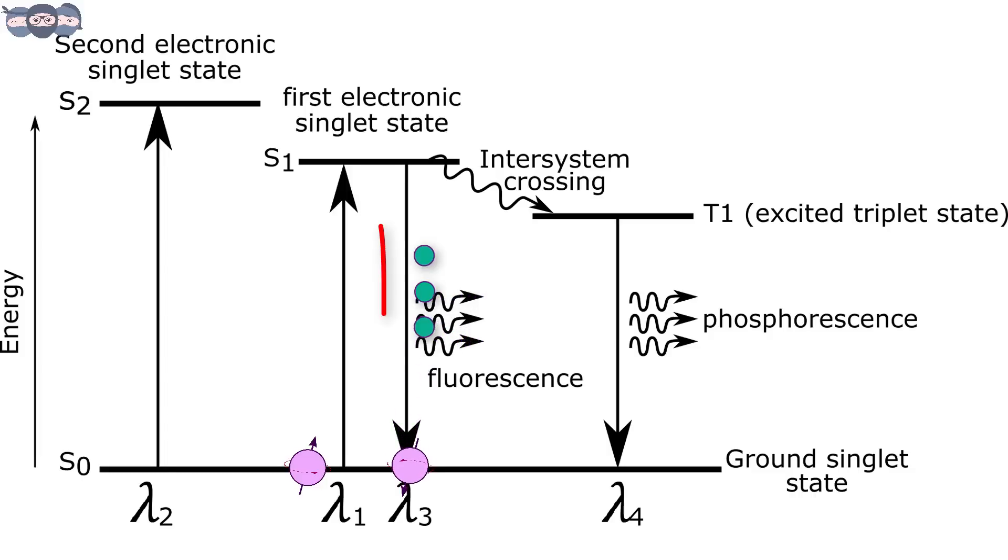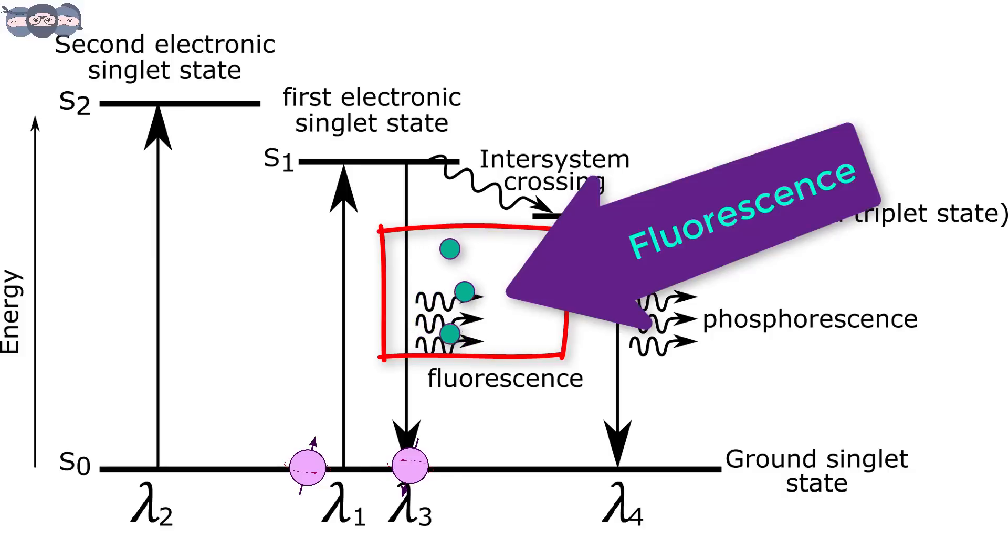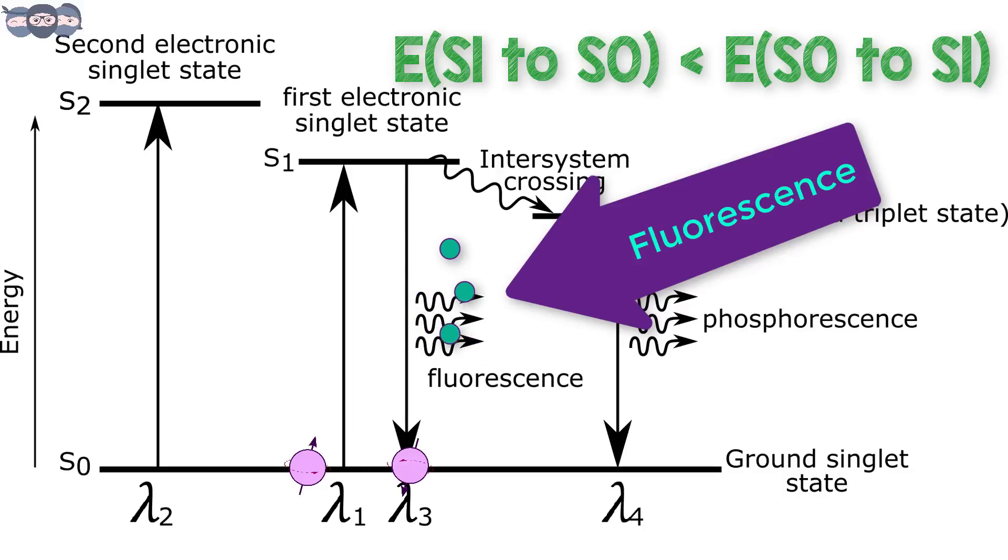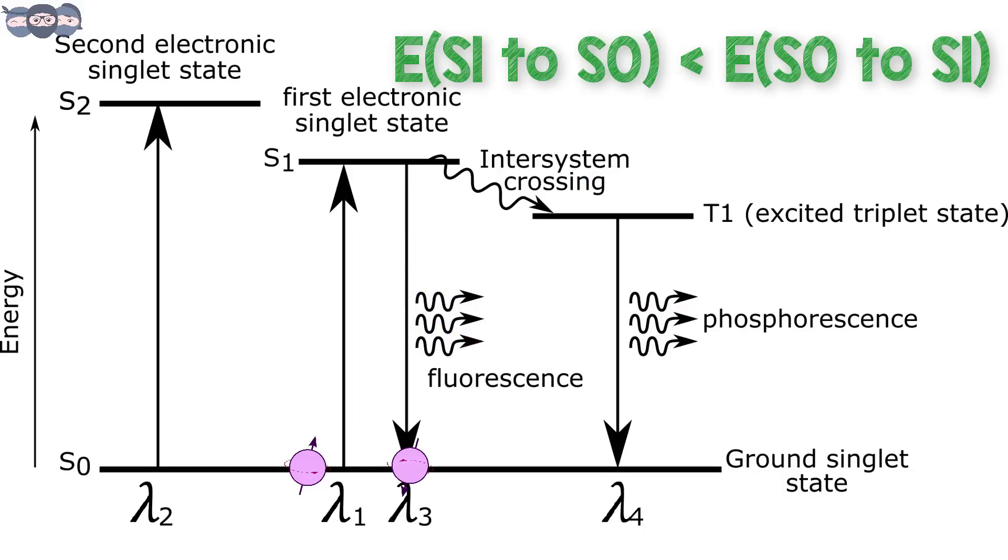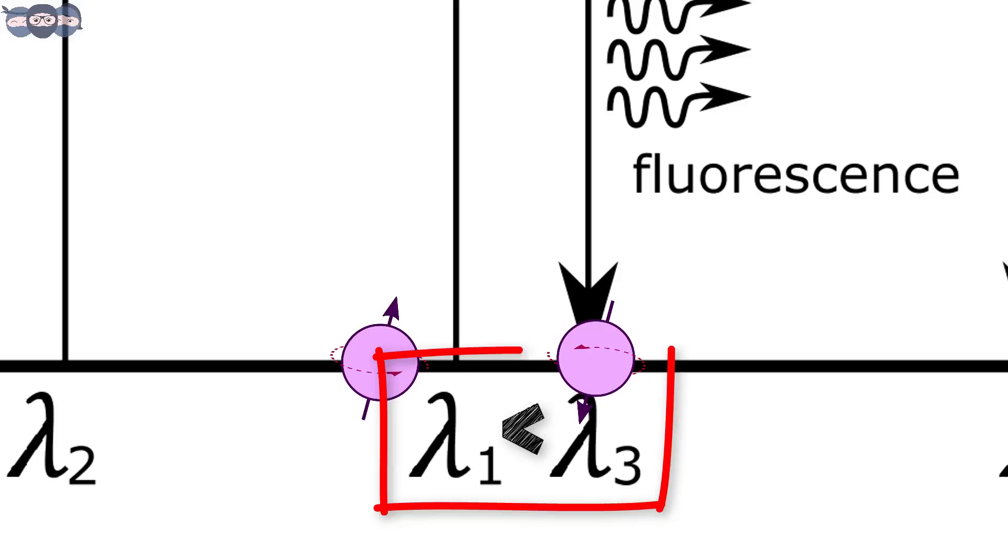During this transition, energy is released in the form of emissions. This phenomenon is called fluorescence. This transition involves less energy than the original absorption, so the emitted wavelength is greater than the absorption wavelength.